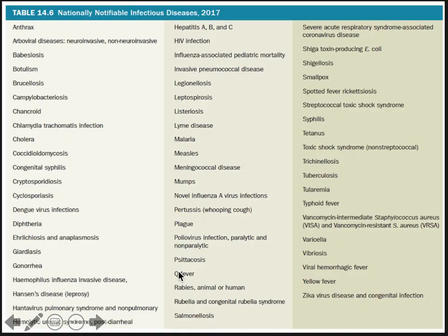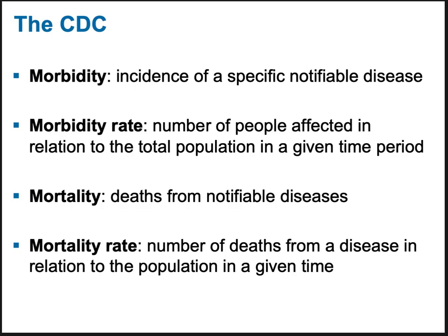There's a huge list of notifiable diseases — you don't need to memorize it, but COVID would now be added to it. Morbidity refers to the incidence of a specific notifiable disease — the number of people affected in relation to the total population during a given time. Mortality refers to deaths from notifiable diseases, and the mortality rate is how many in that population died from that disease during a given time.